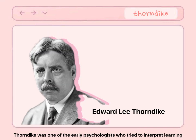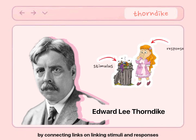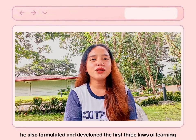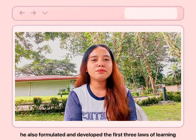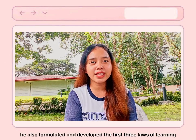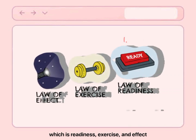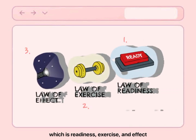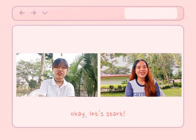Thorndike was one of the early psychologists who tried to interpret learning by connecting and linking stimuli and responses. He also formulated and developed the first three laws of learning, which are readiness, exercise, and effect.